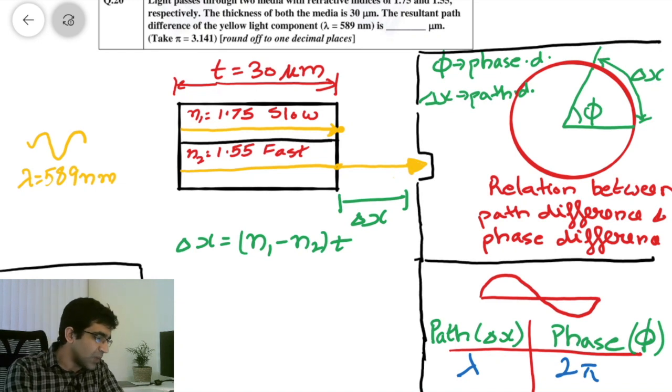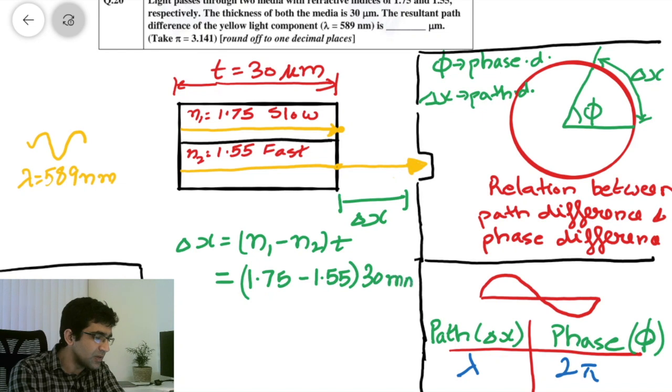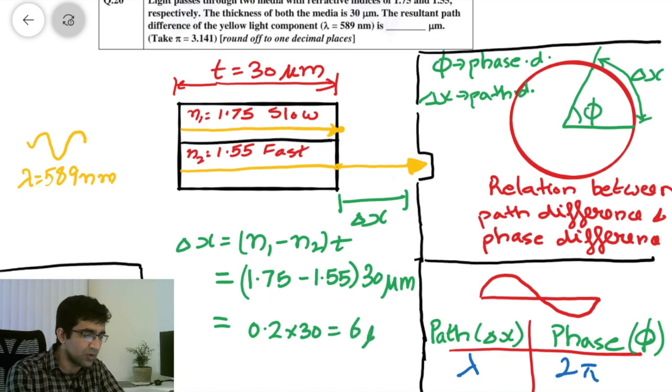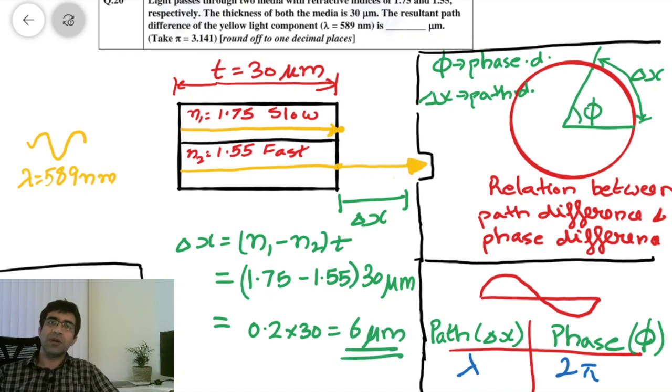So if you put in those values in here, the path difference that you will get will be equal to n1 minus n2, which is 1.75 minus 1.55, and you multiply with thickness which is 30 micrometers. So this will come out to be 0.2 into 30 equals to 6 micrometers. So a path difference of 6 micrometers.